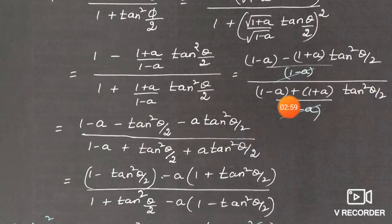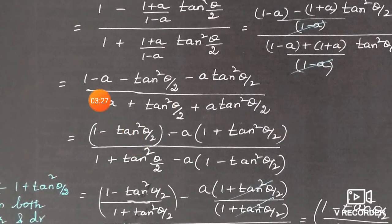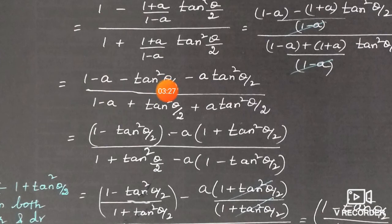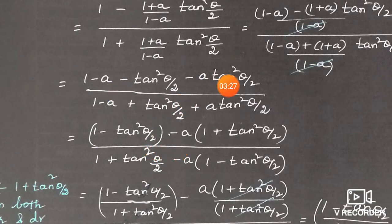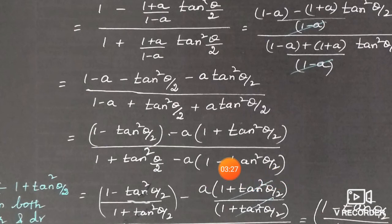Cancelling (1-a) from numerator and denominator, expanding: numerator becomes 1 - tan²(θ/2) - a - a·tan²(θ/2), and denominator becomes 1 + tan²(θ/2) + a·tan²(θ/2) - a·tan²(θ/2)... Grouping terms with and without 'a': numerator = (1 - tan²(θ/2)) - a·(1 + tan²(θ/2)), denominator = (1 + tan²(θ/2)) - a·(1 - tan²(θ/2)).